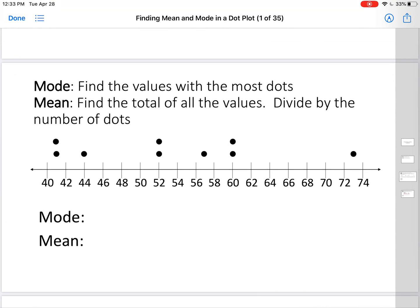First, mode: find the values with the most dots. Okay, let's take a look. Which of these values has the most dots? Well, this one, this one, and this one. So there are three modes to this one.